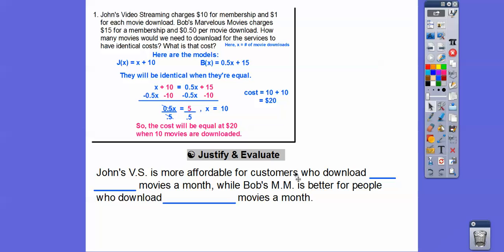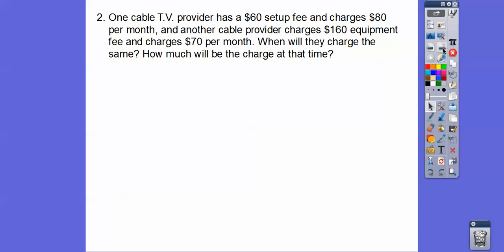So John's will be more affordable when it's less than 10 dollars. And then because they're going to be equal at $10. And then Bob's will be more affordable when it's greater than $10 or more than $10 right there.